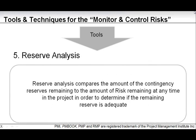Reserve analysis compares the amount of contingency reserves remaining to the amount of risk remaining at any given time in the project, in order to determine if the remaining reserve is adequate. As you go through the project life cycle, risks are created, risks are closed, and risks change in probability and impact. It is important to compare that risk picture with your contingency reserves. If risk goes down, you can lower your contingency reserves accordingly. Conversely, if risk is increasing, you need to escalate, report to stakeholders, and request additional contingency reserves.